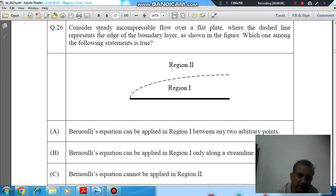Question number 26 is: consider steady incompressible flow over a flat plate, where the dashed line represents the edge of the boundary layer, as shown in the figure. Which one among the following statements is true?